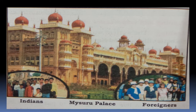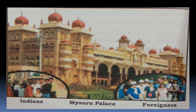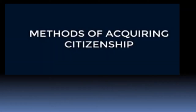In this picture you can observe Mysore Palace. Here you can see tourists who have come to visit. On your left side you can see Indians, who are citizens of India. On your right side they are all foreigners — people who have come from another country.